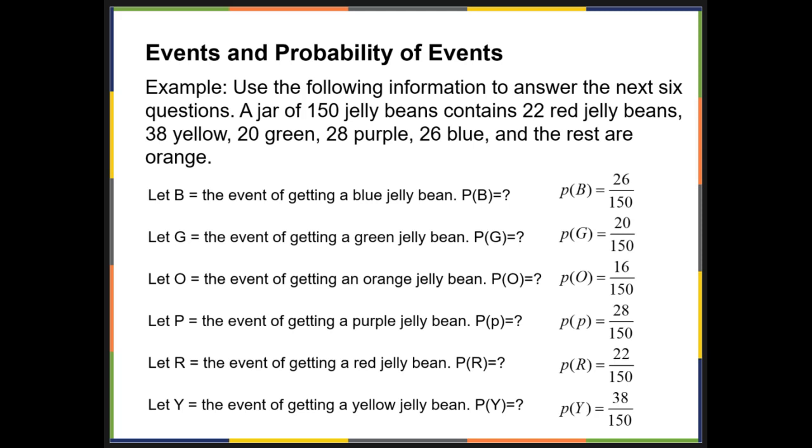Let's look at one other example. Using the following information to answer the next six questions: you have a jar of 150 jelly beans—22 red, 38 yellow, 20 green, 28 purple, 26 blue, and the rest are orange. So they want to know what's the probability of getting a blue? Well, there's 26 blue out of 150 total, so the probability of blue equals 26 over 150.